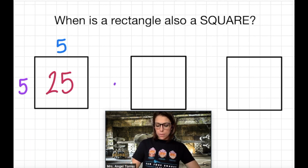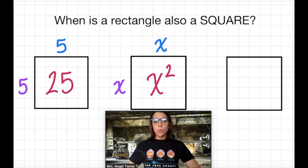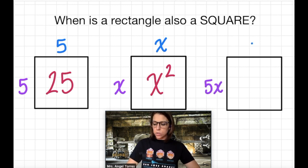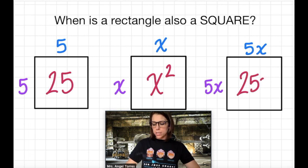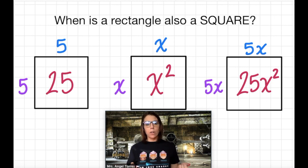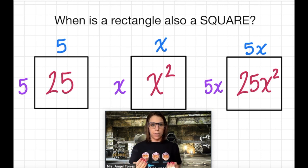Similarly, if the width of the square was x, then the length of the square would also have to be x, making the area of the square x squared. And if the width of the square was 5x, that would mean the length would also have to be 5x, and the area would be 25x squared. So a square is a type of rectangle that has a width and a length that have the same measure or the same value.